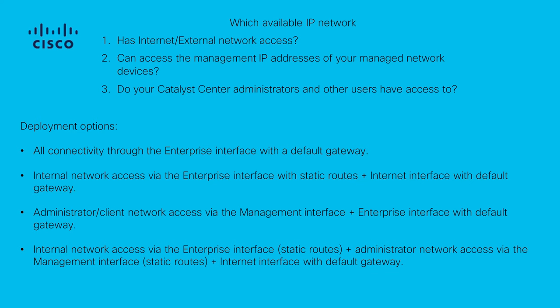Based on all this information, here is how to determine which interfaces are needed in your environment and how to configure their routes. Start by determining which of your available IP networks has access to the internet and other external services. Next, determine which IP network has access to the devices you will be managing. Finally, verify which IP network your administrators will be able to access. If all three of these roles can be accomplished from a single IP network, then you only need to use the Enterprise port with a default gateway.